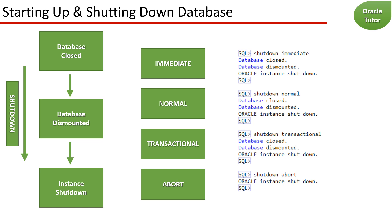Use the Shutdown command to shut down the database instance. Various modes of shutdown are immediate, normal, transactional, and abort. The immediate shutdown mode is the most commonly used option. It immediately terminates all current SQL statements being processed by the database instance, rolls back any uncommitted transactions, and disconnects all connected users. The database server then closes and dismounts the database before shutting down the database instance.